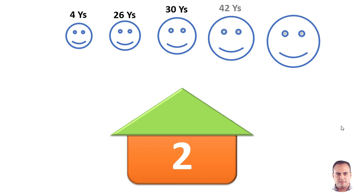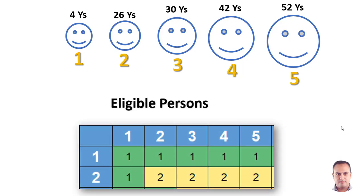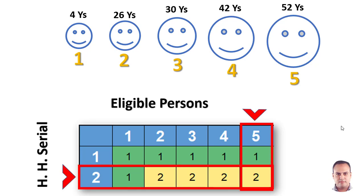We have to move to the second house. Assume that we have five eligible persons. After sorting them according to age and referring to our Kish grid, now we are in the second house. We have five eligible persons. So we have to choose the second one.